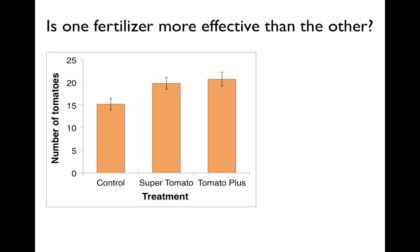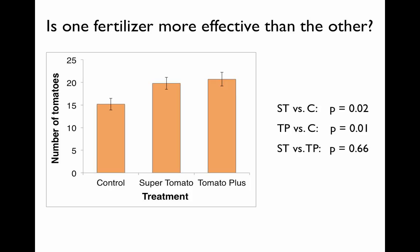You can see that there appear to be some differences between these treatments. We can use a statistical test — in this case an ANOVA — to determine whether each of these treatments is significantly different from the other two. When we do that, we can get a p-value for the comparison between each pair of treatments, as shown here on the right. What we find is that some treatments were significantly different from one another, and others weren't — some p-values are less than 0.05 and others aren't.